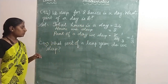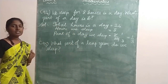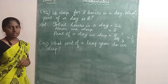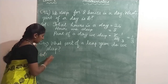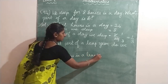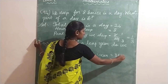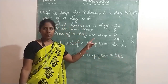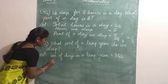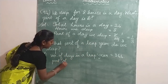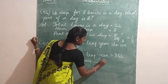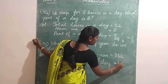Coming to the next question: what part of a leap year do we sleep? A leap year has 366 days because one extra day is added in February — the 29th of February. Number of days in a leap year equals 366. Since we sleep for one third of each day, for 366 days we multiply one third by 366. So the part of a leap year we sleep equals one third of 366.